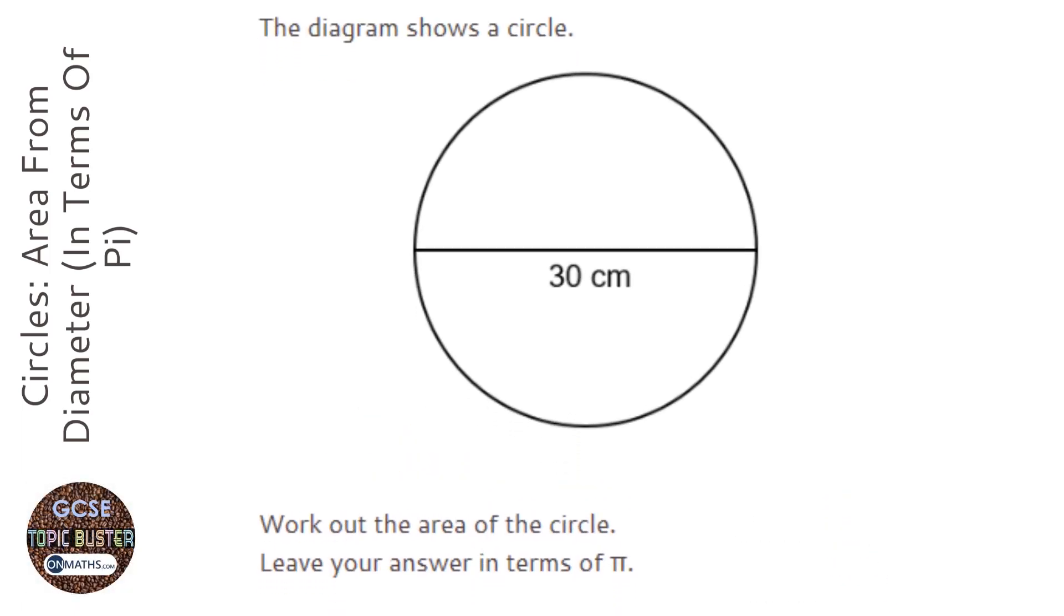OK, so the first thing we need to do is remember what the formula is for an area of a circle. The area is pi times r squared.